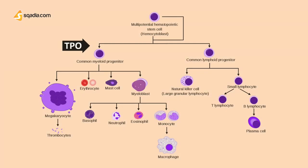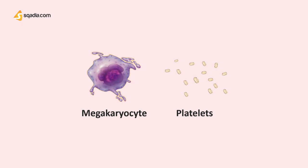Inside the bone marrow, thrombopoietin promotes the production of myeloid stem cells or myeloid progenitor cells originating from hemocytoblasts, also known as hematopoietic stem cells. This leads to the production of megakaryocytes, which are extremely large hematopoietic cells in the bone marrow. These megakaryocytes then fragment into minute platelets in the bone marrow or soon after entering the blood. Zooming in, platelets can be seen as little pieces cut off from these cells — just imagine the megakaryocyte as a tree and the platelets as broken-off branches.